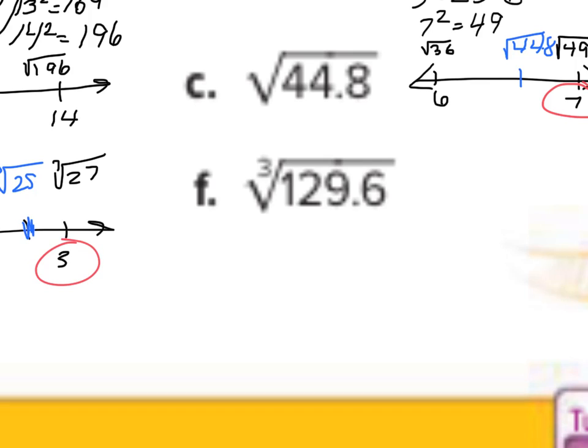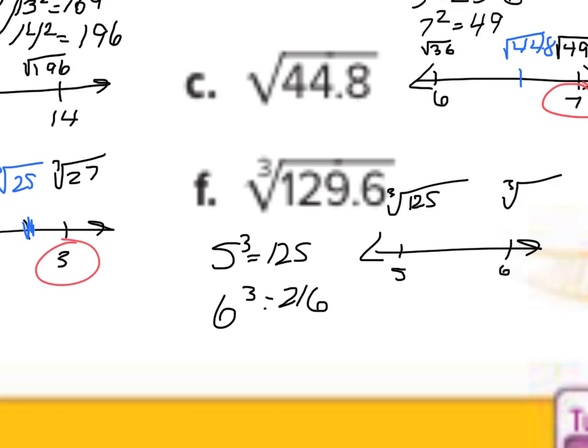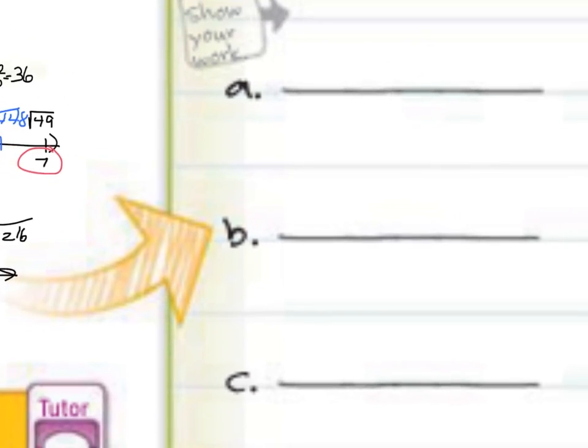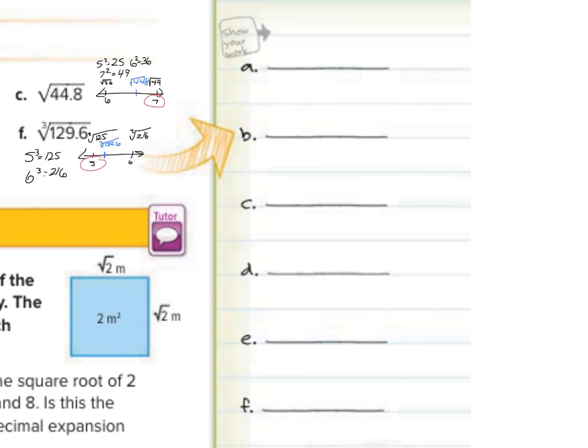As we continue on to f, well, 5 cubed is 125. 6 cubed is 6 times 6 times 6, which is 216. And so 129.6 falls between those two, and as we draw our number line, we'll have 5 and 6, with the cube root of 125 being 5, and the cube root of 216 being 6. And 129.6, well, that's going to fall probably a lot closer to our 5 than our 6. And so our answer is going to be 5. So to recap all of our answers, a was 6, b was 13, c was 7, d was 4, e was 3, and f was 5.